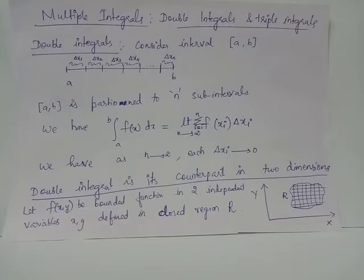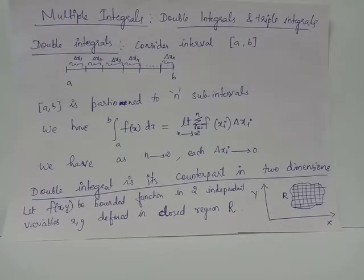Geometrically, it means we are dividing the interval ab into very minute subintervals whose width, represented using delta xi, approaches 0. So in order to integrate f of x, which is defined inside the interval ab, the definite integral a to b f of x dx coincides with limit n tends to infinity, summation i ranges from 1 to n,